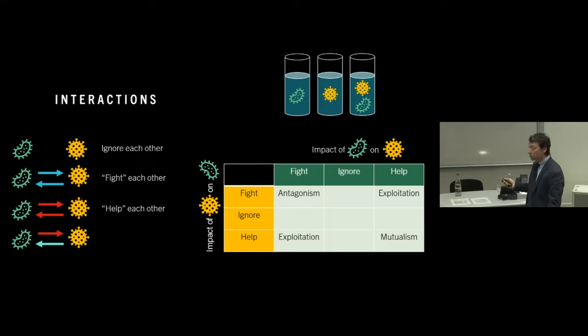One is by releasing toxins into the environment, by releasing antibiotics, for example, that kill the other species or inhibit their growth. Or they can influence each other indirectly. Perhaps they're feeding on the same food source, and the food that's used up by one of the species is then not available to the other species. And in this way, the other species' growth is diminished. Or they could be helping each other. There are lots of interesting ways in which they can do that. They may be releasing metabolic byproducts into the growth medium, which can then be used by the other species.